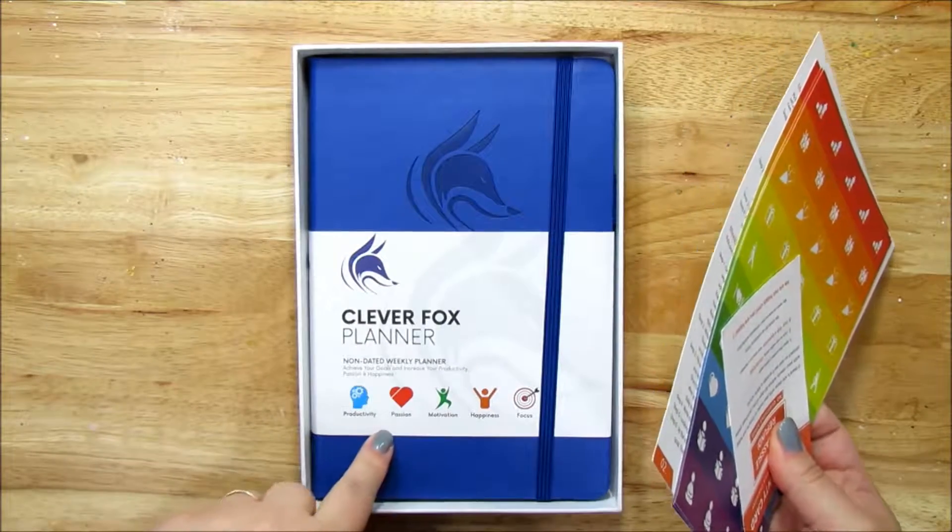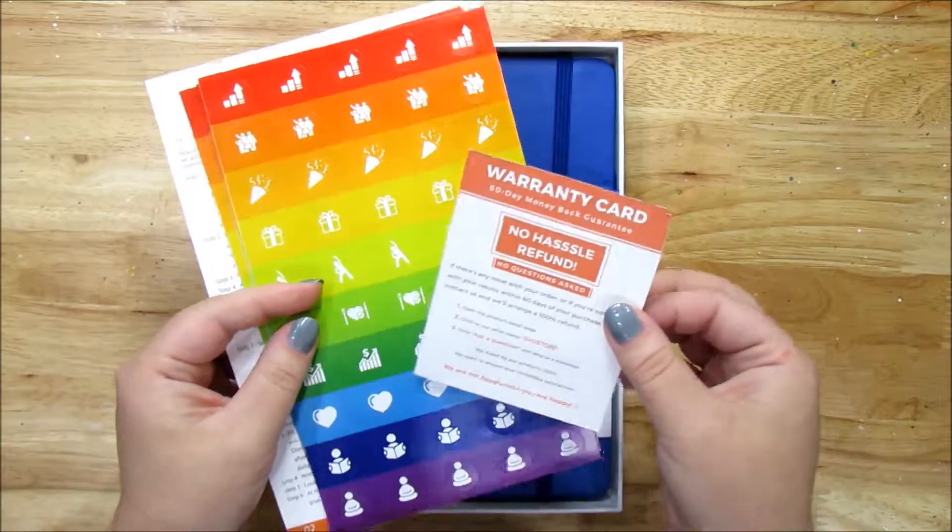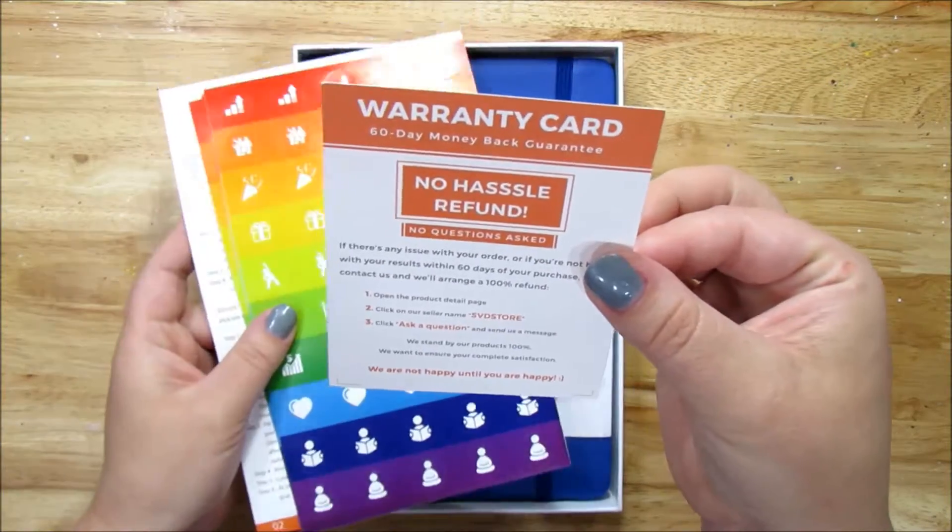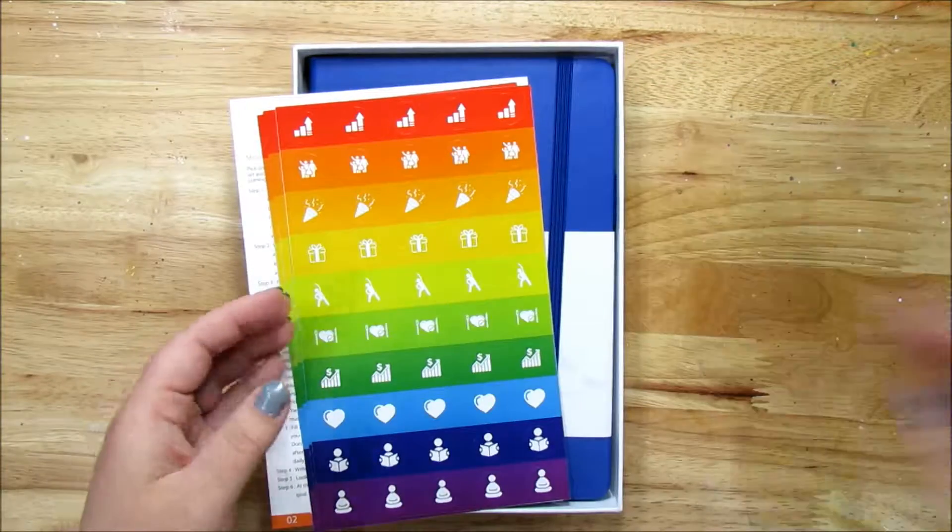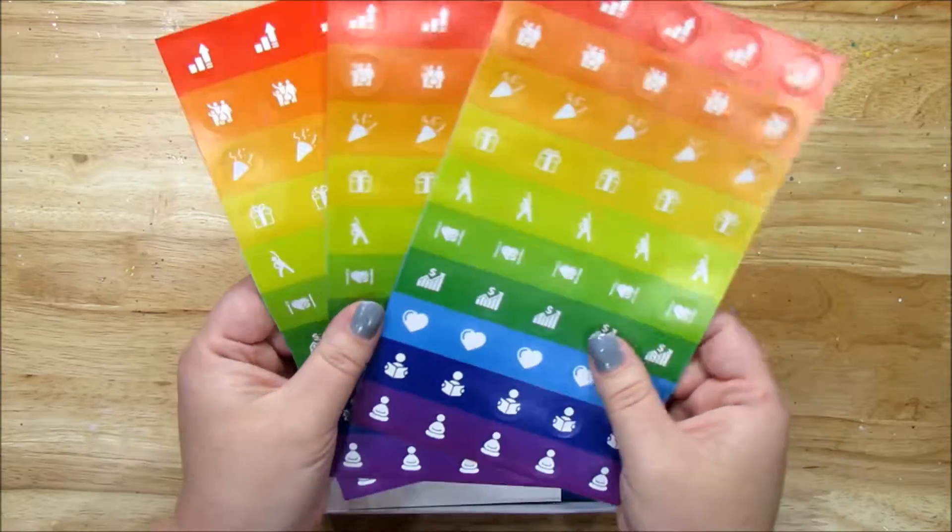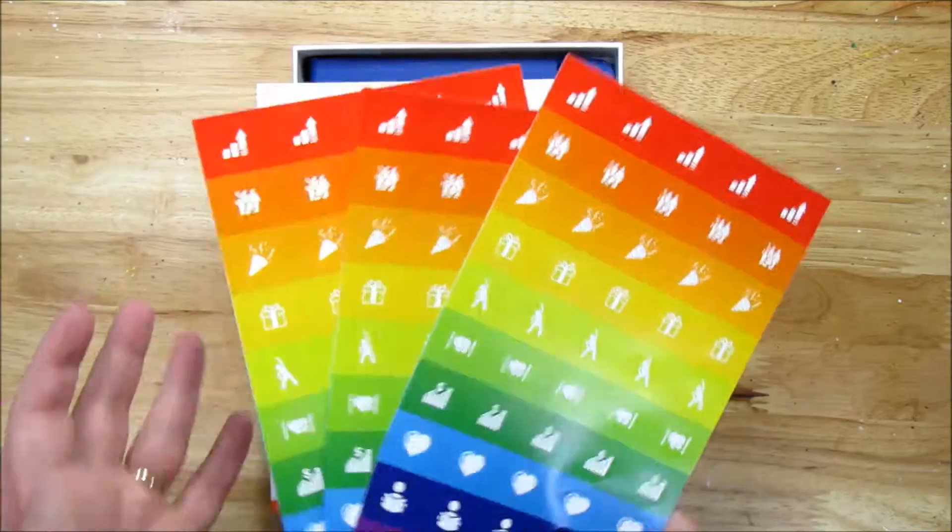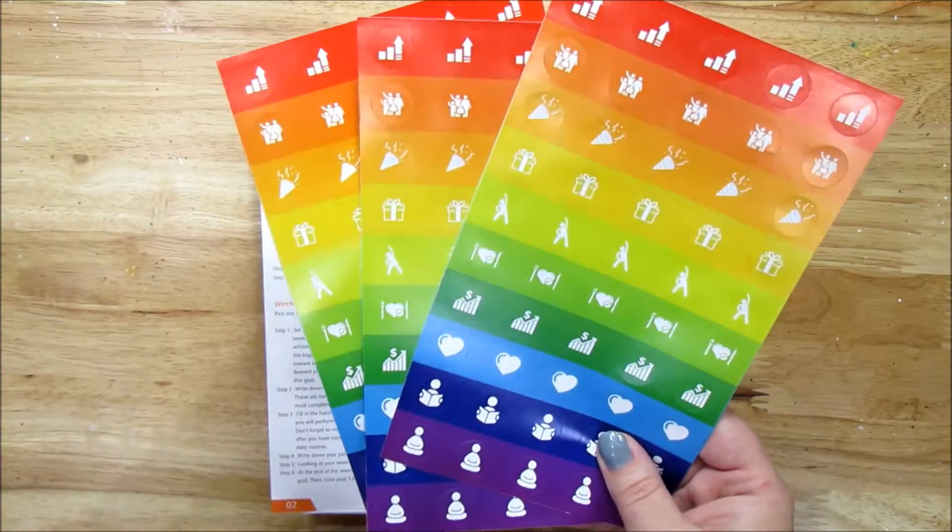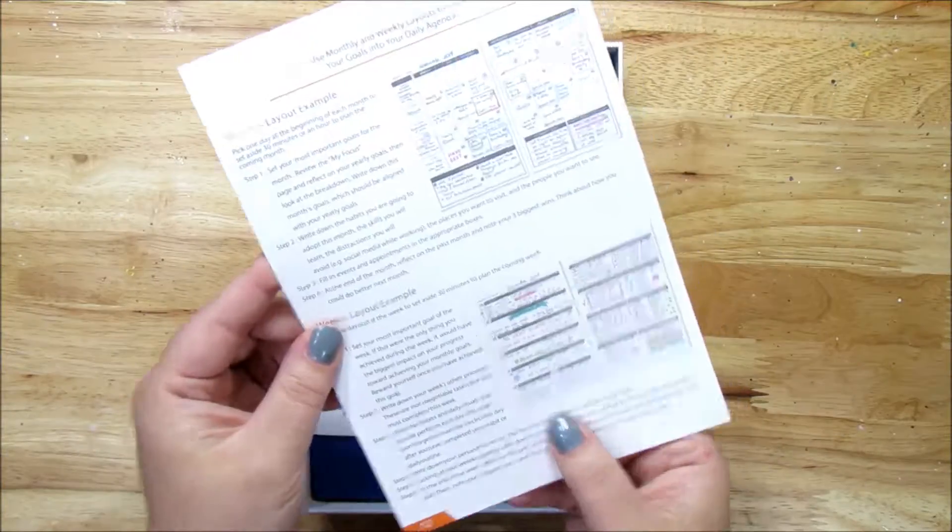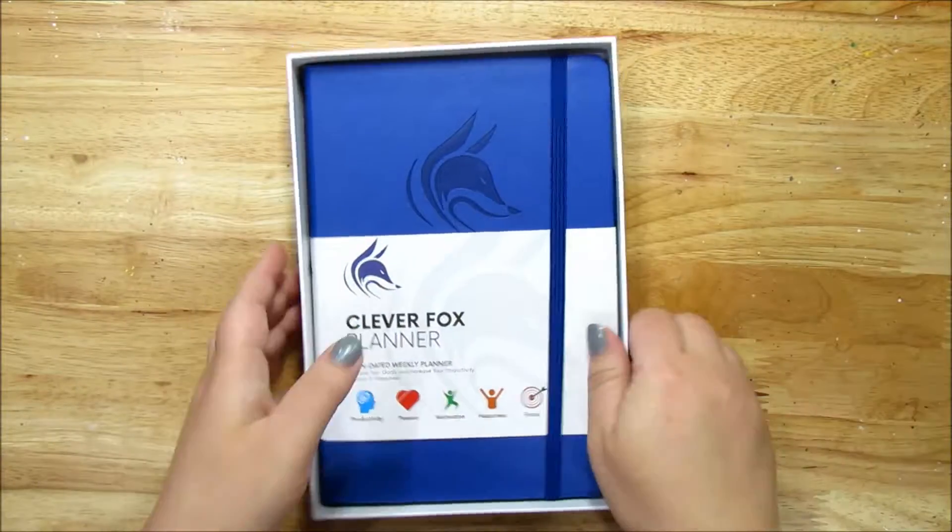So I got the non-dated weekly planner. When you open it up, you have a warranty card, which is great and no hassle refund. So that's really super duper. We've got some reminder stickers. They're kind of cute and they're rainbow colored. Handy for those of you that use your planner in this way. We also have a little how to use the planner. So lots of instructions in here.